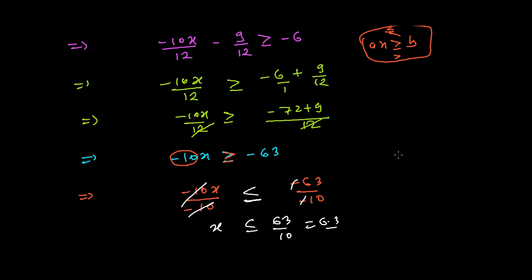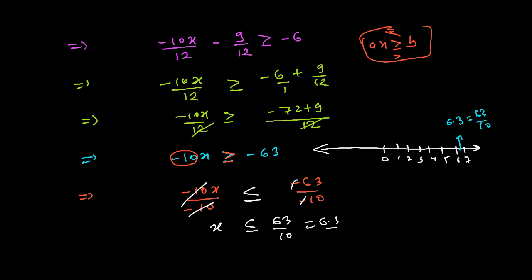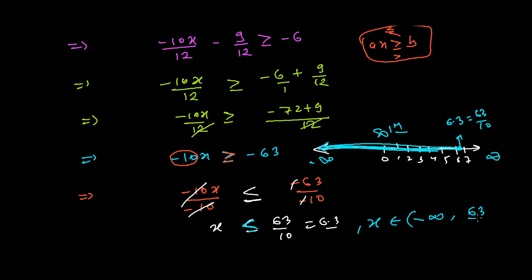The minus signs cancel and we get x is less than or equals to 63 over 10, which is 6.3. On the number line, 6.3 lies between 6 and 7. Our solution is all numbers from negative infinity up to and including 63 over 10. We use a closing bracket at 63 over 10 because of the equals-to sign.